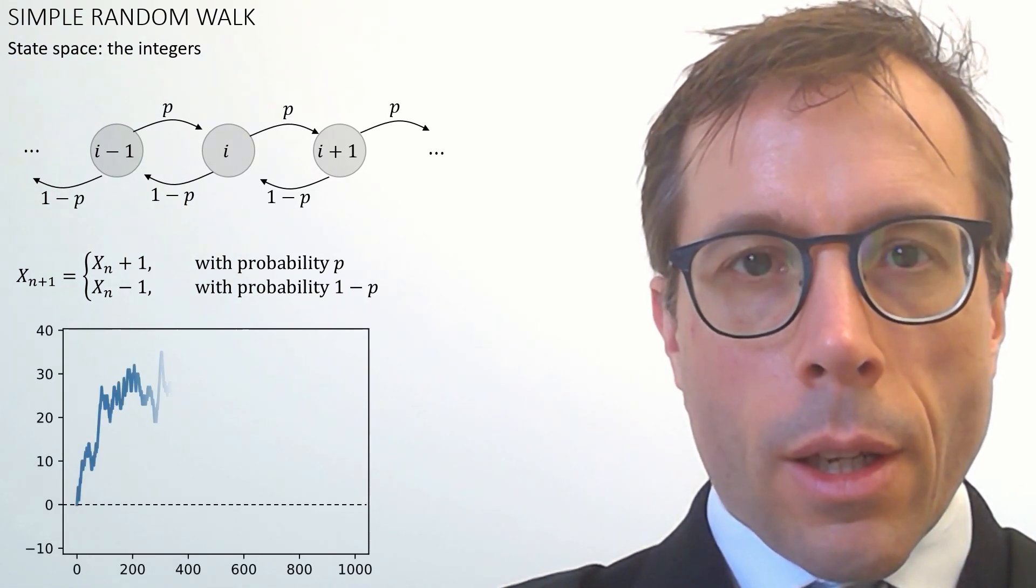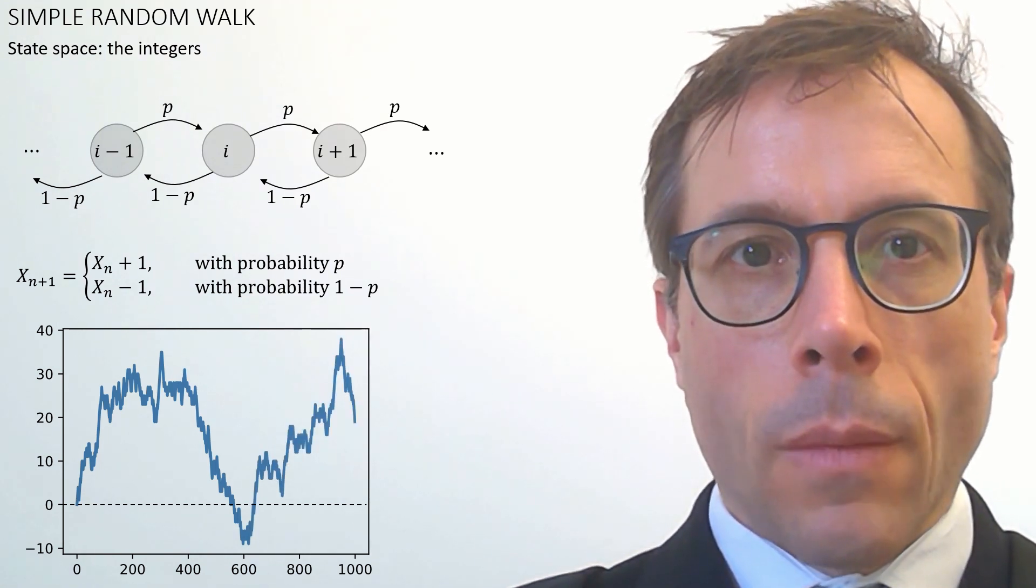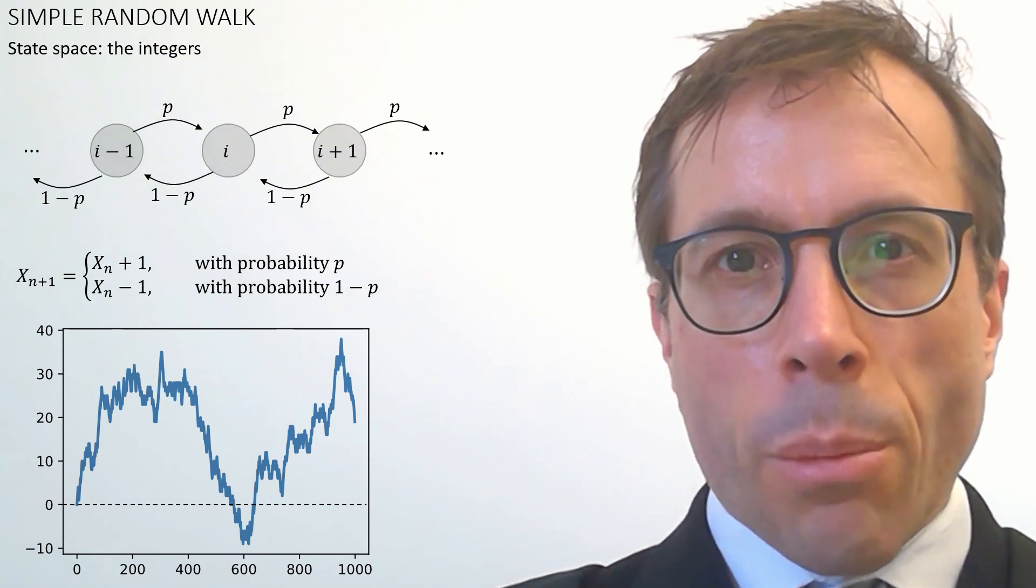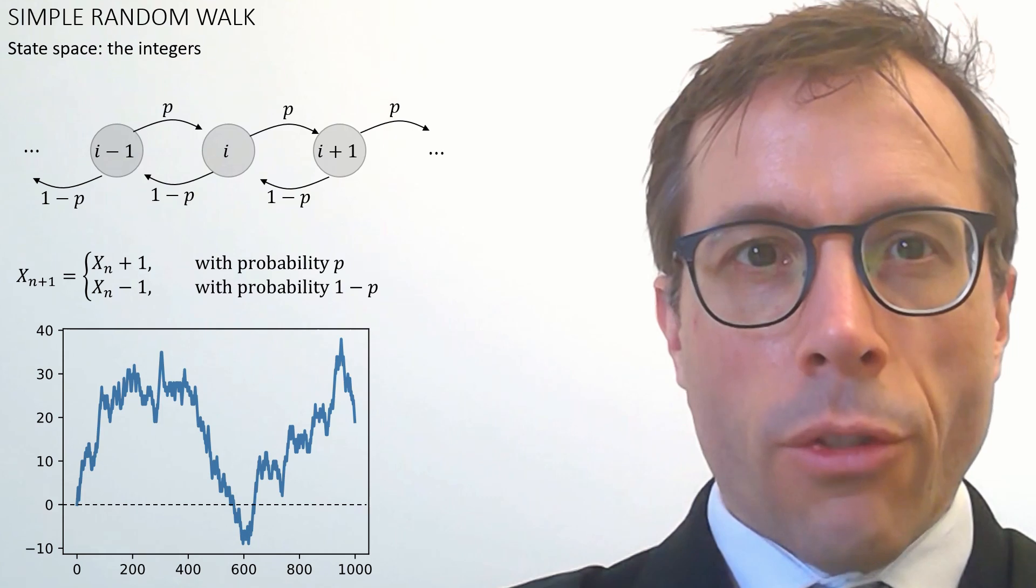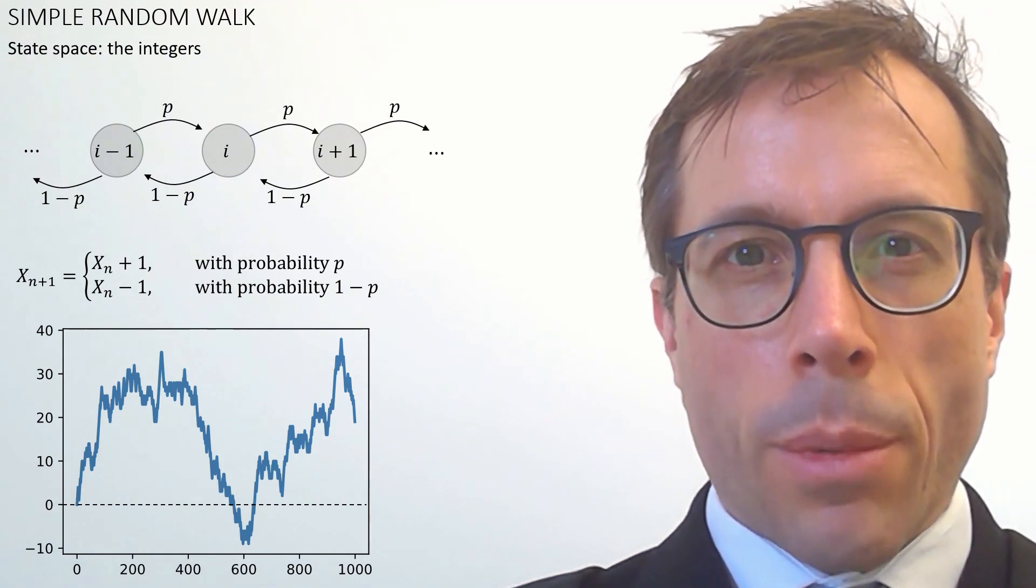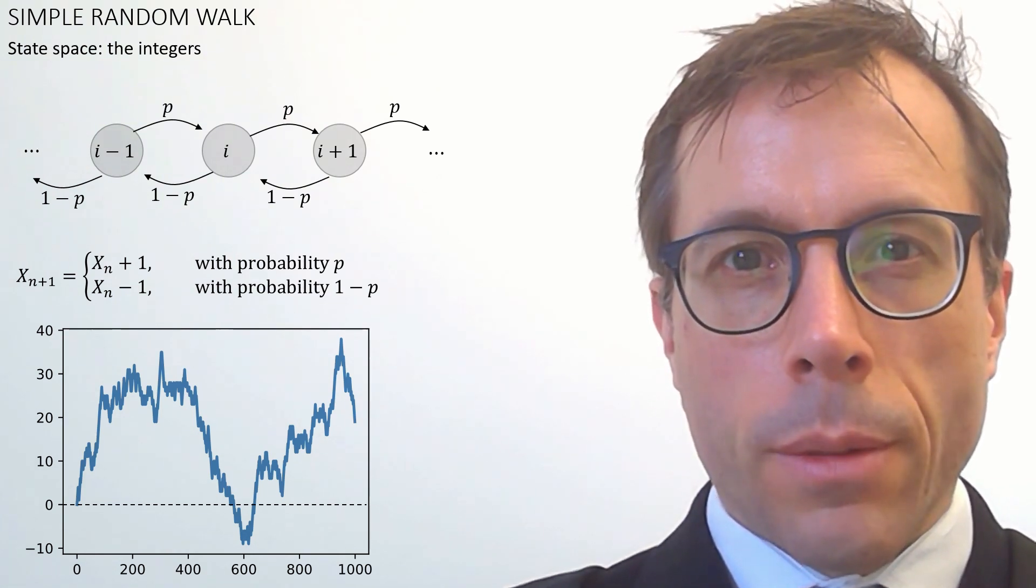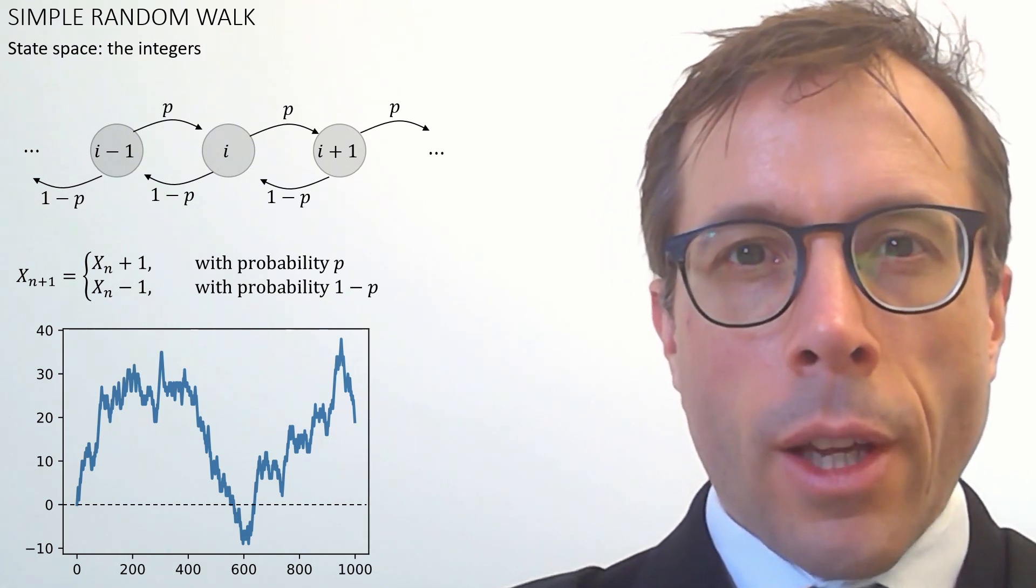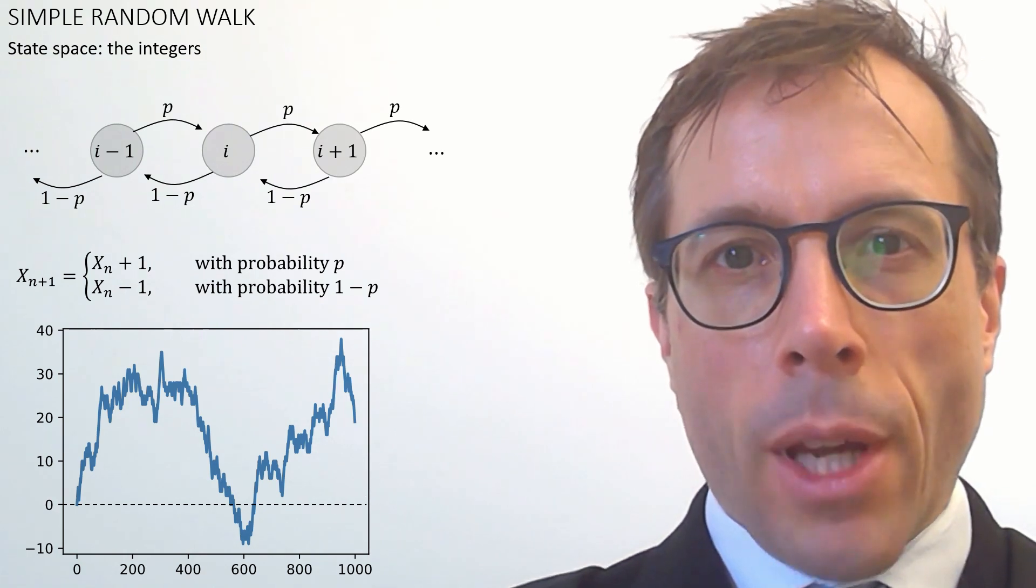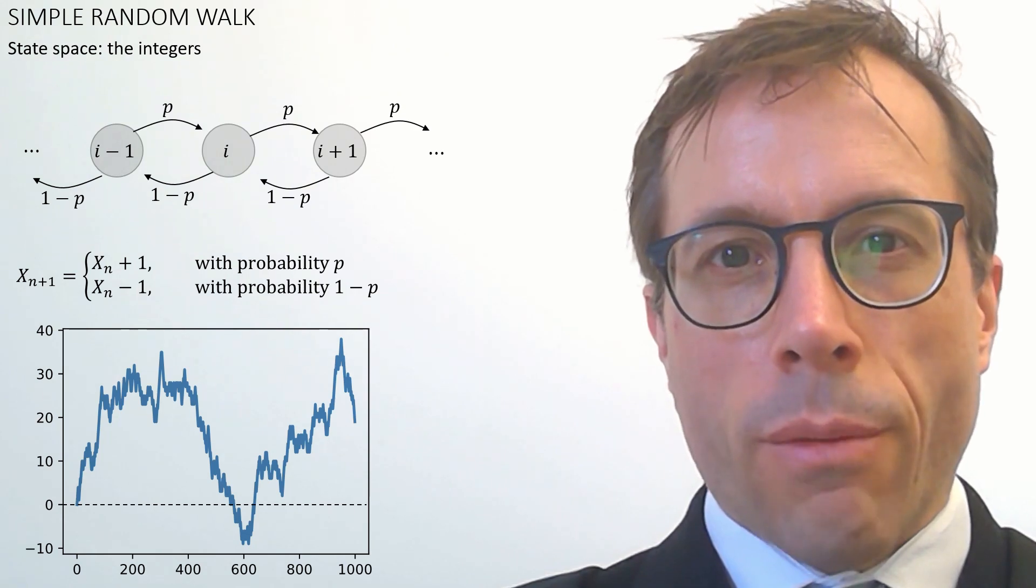And here's a simulation run at p equals a half. This sort of Markov chain model is used for stock prices. A jump right means the stock price goes up by some small percentage, say 0.1%, and a jump left means it goes down by 0.1%. And then this simple random walk is the basis for modelling stock options. What you might want to calculate is how high the random walk is likely to reach in a given time, and this is the basis for derivative pricing and for the Black-Scholes formula, which won a Nobel Prize for its inventors.